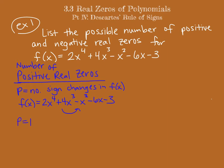Descartes' rule of signs says the number of positive real zeros is either P or going down from P by a multiple of 2. I can't subtract 2 from 1 without getting a negative number, and we can't have a negative number of something. So the number of positive real zeros is 1 — there is 1 positive real root. Remember, roots and zeros are the same thing.